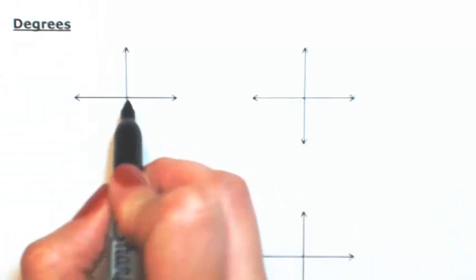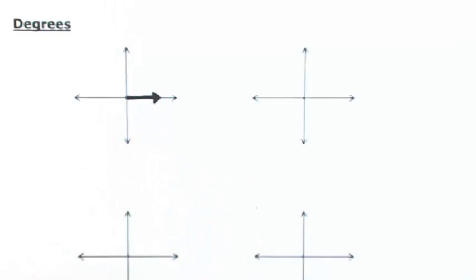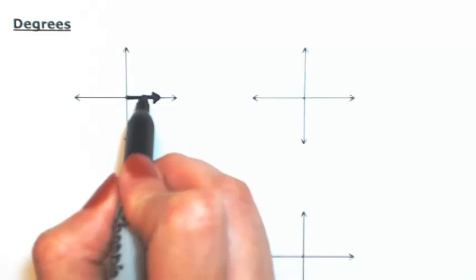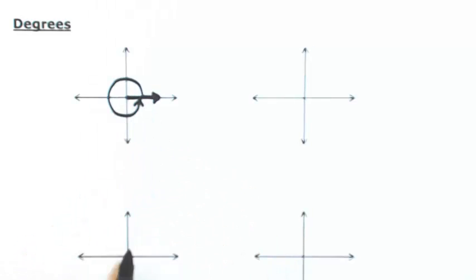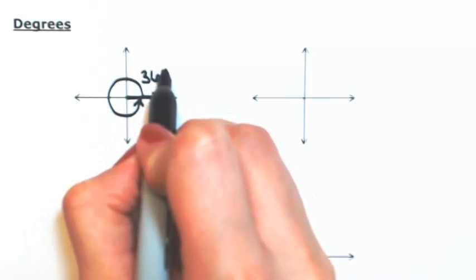Something that you're probably familiar with is if I were to start from the initial side and go completely all the way around, that forms a circle. And we know that that's 360 degrees.